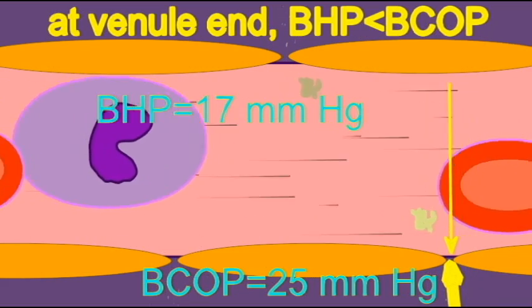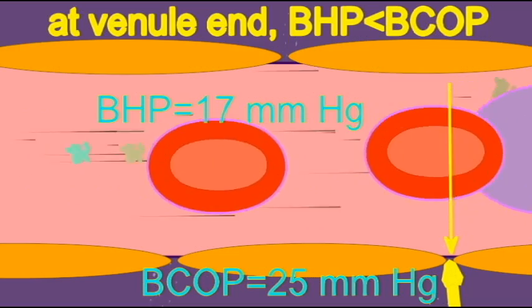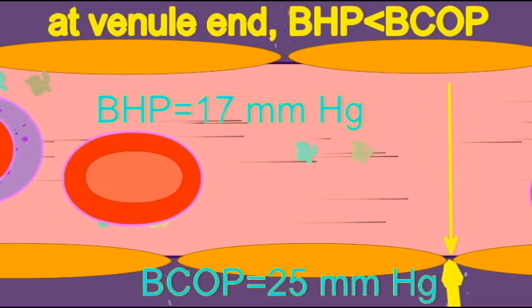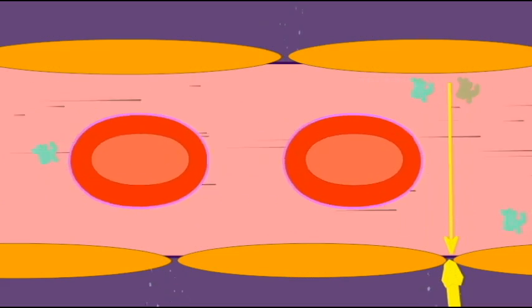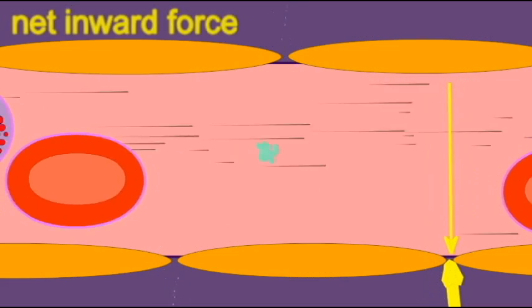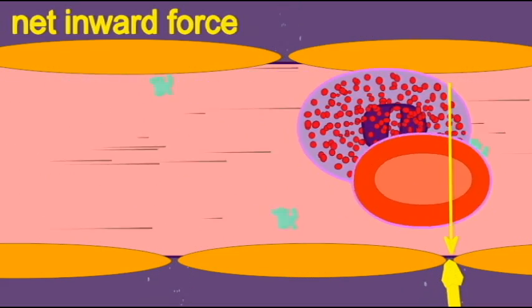Because of this, the net pressure is that of an inward force, which returns fluid to the capillary, bringing materials with it. This is what occurs at the venule end of the capillary.